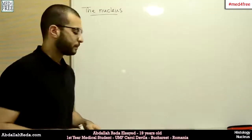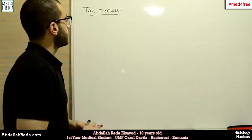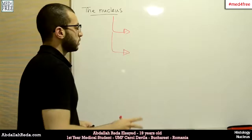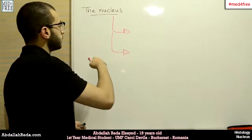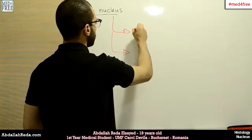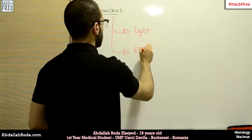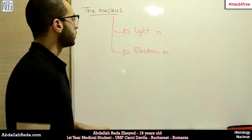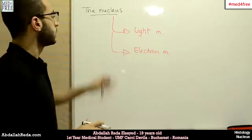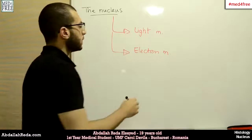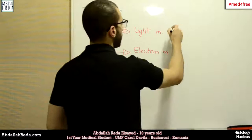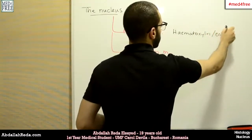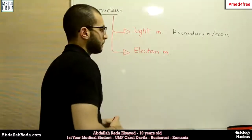What does the nucleus look like? We can talk about two main aspects because we use two kinds of microscopes in order to examine how the nucleus looks. We have the light microscope and we have the electron microscope. For the light microscope, in order to see how the nucleus looks, we have to use a dye or stain. One of the most commonly used stains is the hematoxylin and eosin mixture — two dyes which are used together.